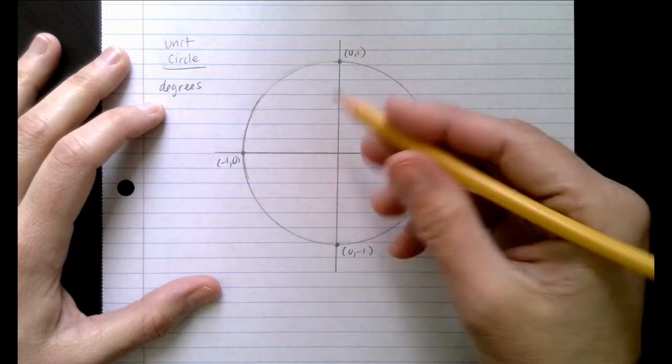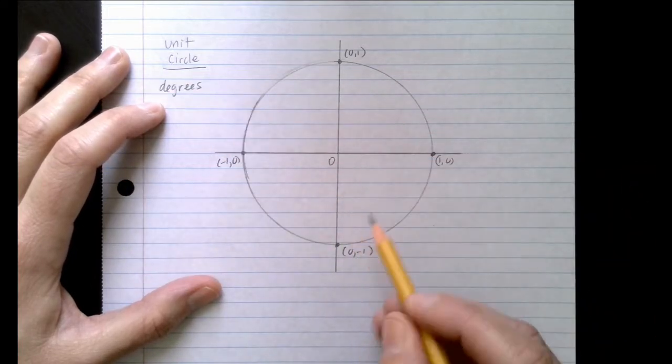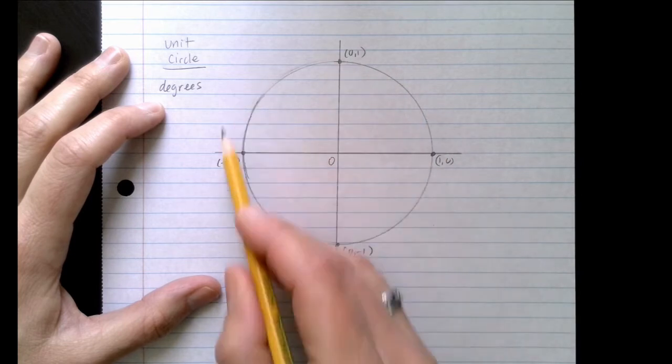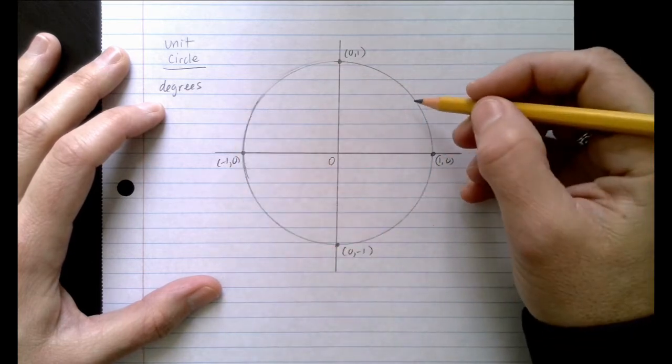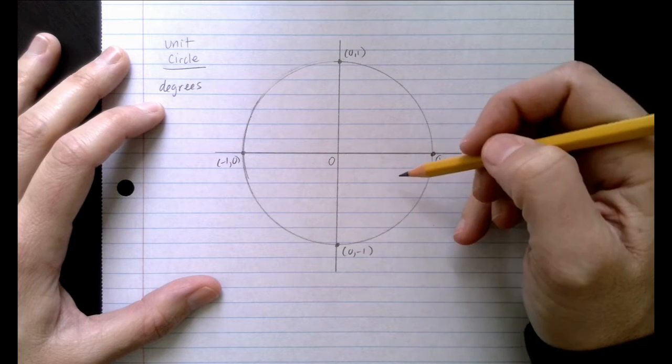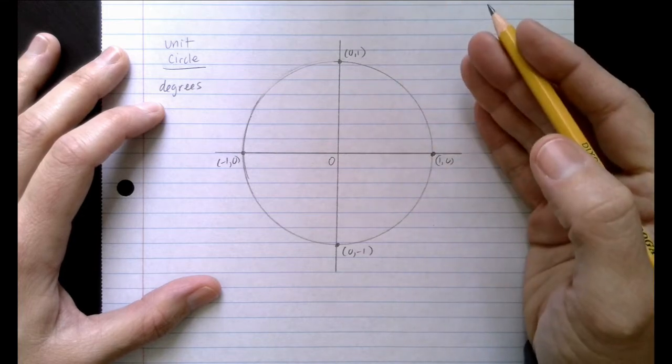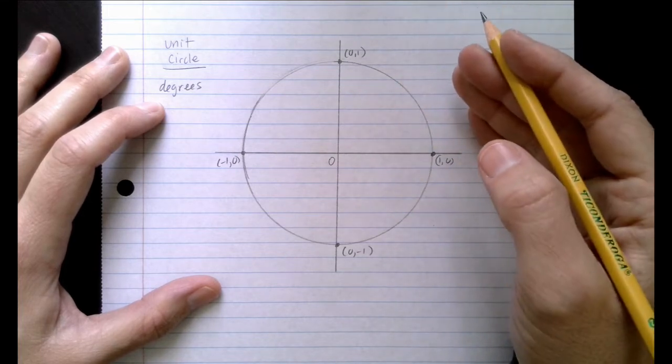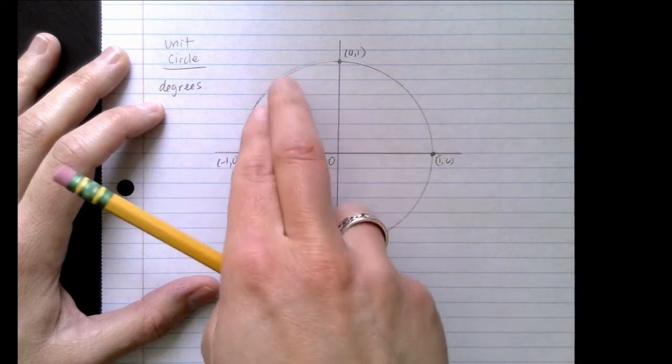So if you take your unit circle, which is centered at the origin, its radius is 1, we can actually look at key angle measures in all four quadrants. Now the best part about the unit circle is because of symmetry, a lot of these measures will repeat.